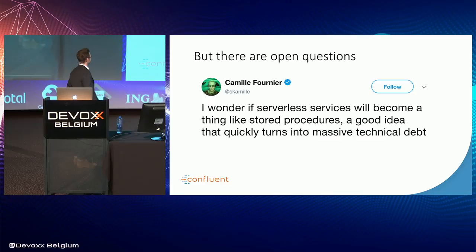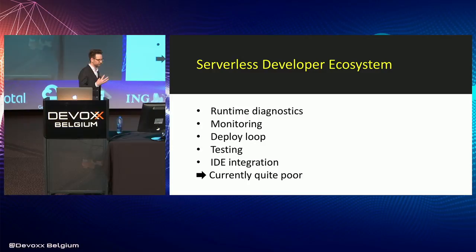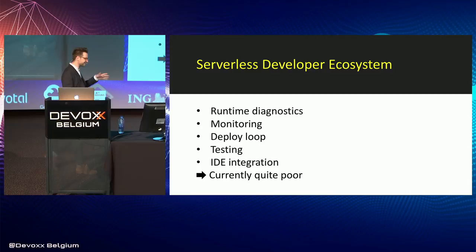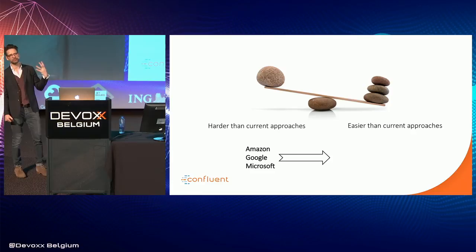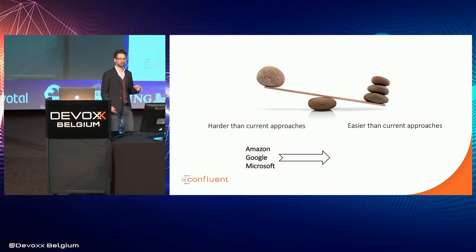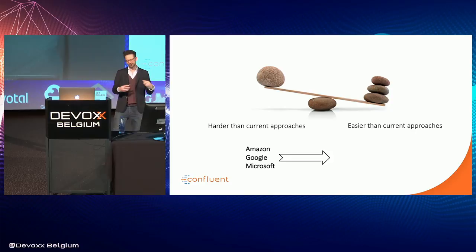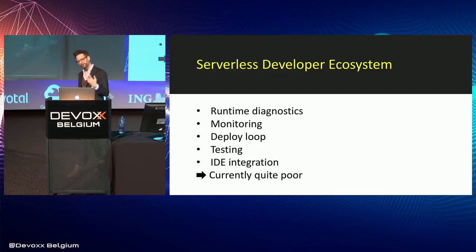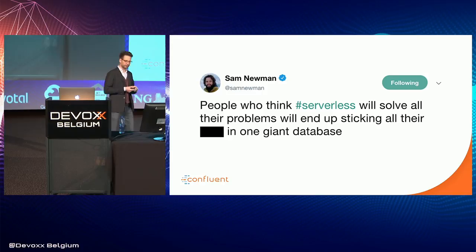But there are lots of open questions. Camille Formier mentioned whether serverless services will become like stored procedures — a good idea that quickly turns into massive technical debt. The success of serverless as a platform will be based on the ability of cloud providers to supply what developers need: runtime diagnostics, monitoring, a fast deployment loop, easy testing, and tight IDE integration. Currently things are sort of okay, maybe not great. But it's probably going to get better with three of the biggest companies behind it. Today it's harder to write in functions because you've got multiple functions flowing around your ecosystem.